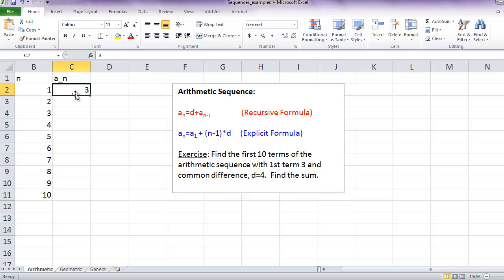For the value of those terms, we know that we start at 3 because that's given in the problem. For the next term, that's going to be equal to the previous term plus the common difference, which is 4. And we can fill down that formula and that computes all of the terms.